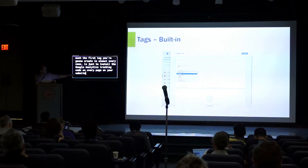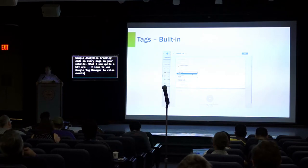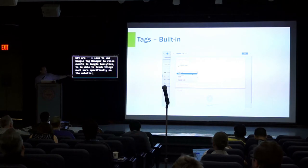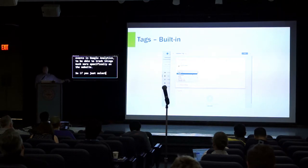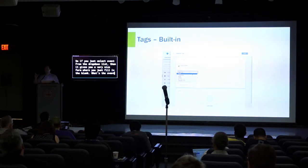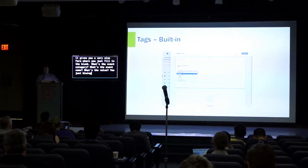What I use quite a bit is Google Tag Manager to raise events in Google Analytics to track things much more specifically on the website. If you select event from the drop-down list, it gives you a very nice form where you just fill in the blanks — what's the event category, the action, the label, and the value. It creates all the code for you.